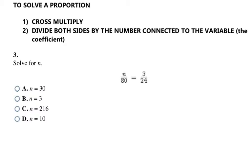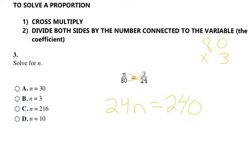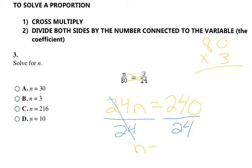Now we solve a given proportion. The first step is to cross multiply, and the second is to divide both sides by the coefficient — the number connected to the variable. Cross multiplying gives 24n = 80 × 3, which is 240. Then divide both sides by 24: the 24s cancel, leaving n = 240 ÷ 24 = 10. You can work that out as long division on the side. The answer is choice C.